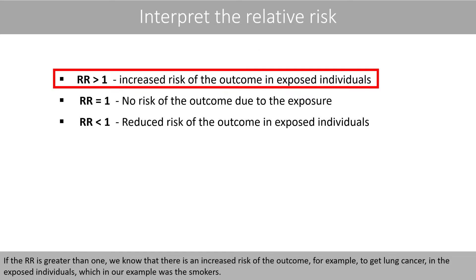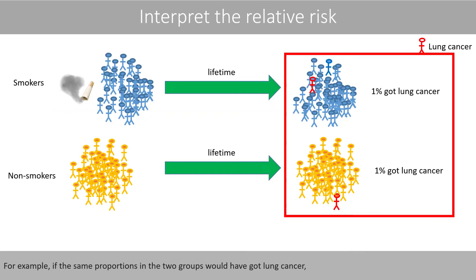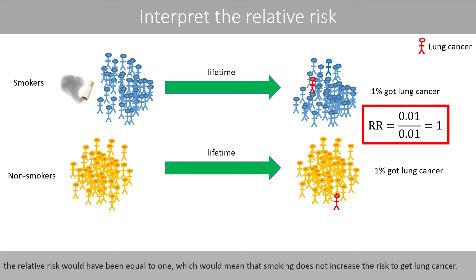If the relative risk is greater than 1, we know that there is an increased risk of the outcome in the exposed individuals — in our example, the smokers. If the relative risk would have been equal to 1, then the exposure has no effect on the outcome. For example, if the same proportions in the two groups would have got lung cancer, the relative risk would have been equal to 1, which would mean that smoking does not increase the risk to get lung cancer.